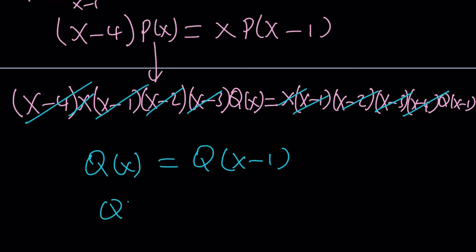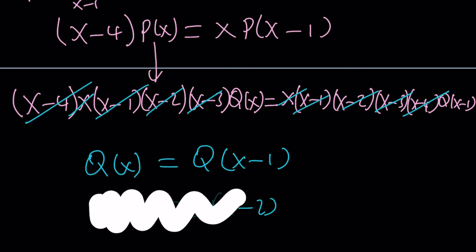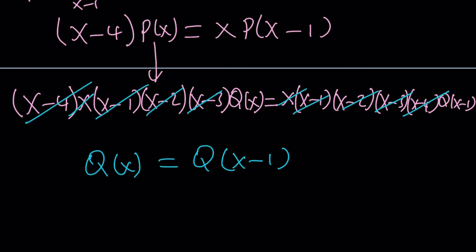And then you could continue doing this, and you can replace X with pretty much anything you want. It's always going to be the same value. How is that possible if Q of X contains X? Well, this just means that Q of X does not contain X. In other words, Q of X is a constant.